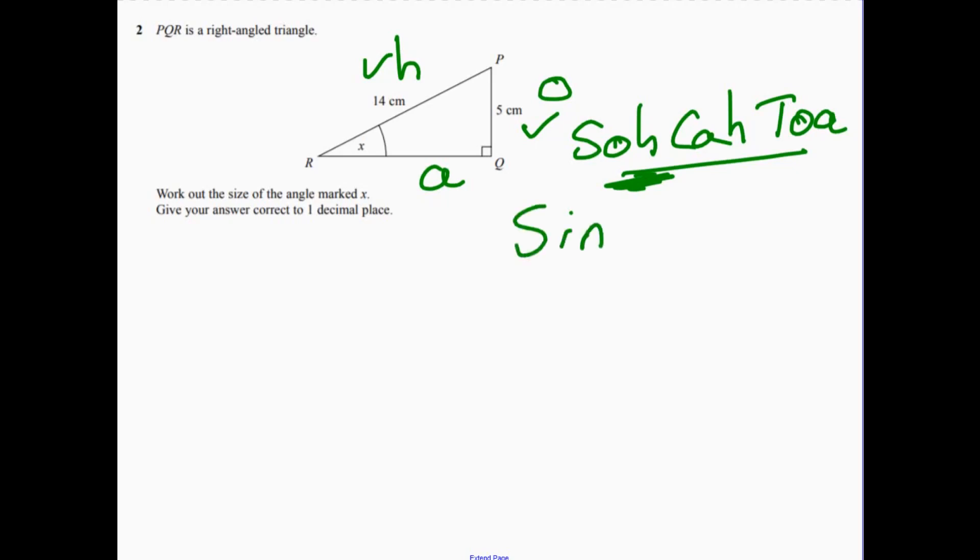SO means the sine of the angle, you use theta, the symbol for the angle, equals opposite over hypotenuse.